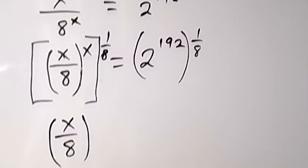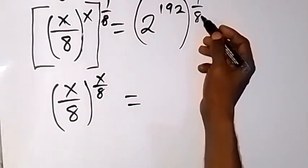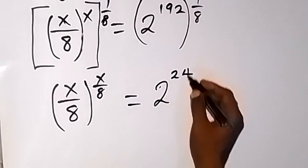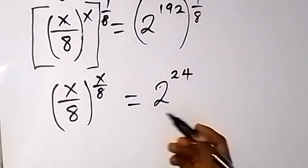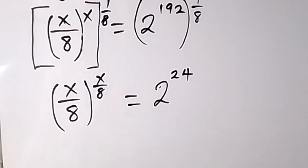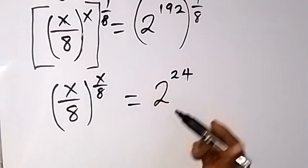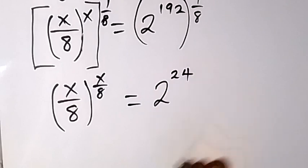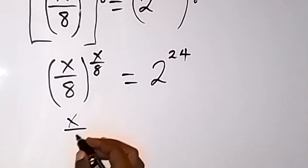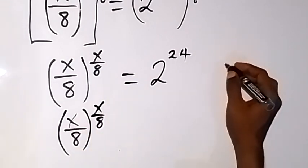We have raised to power x over 8 on this side as well. Then, 8 can divide 192 and that will give 2 raised to power 24. Now, let's try to make the left hand side look similar — a number raised to the power of that number — so x over 8 raised to power x over 8. We can separate this and we have x over 8 raised to power x over 8.